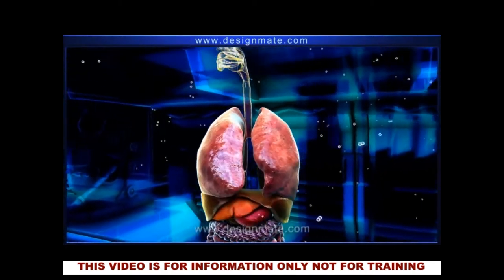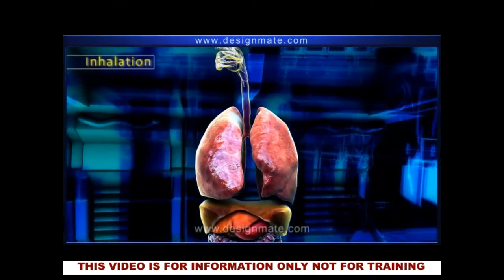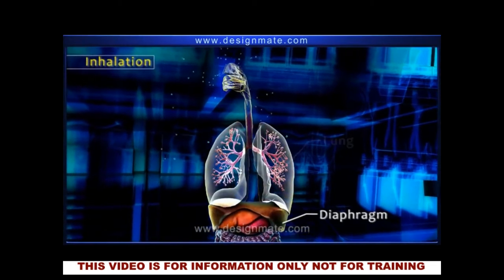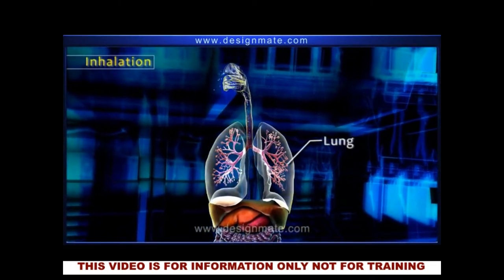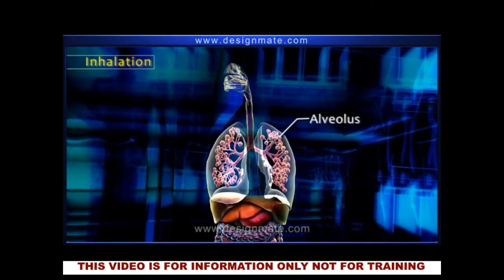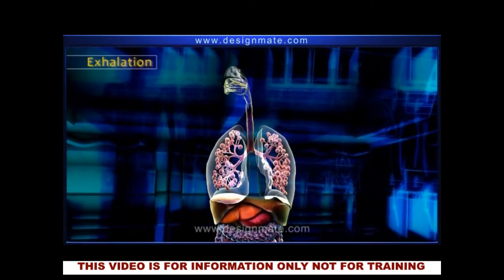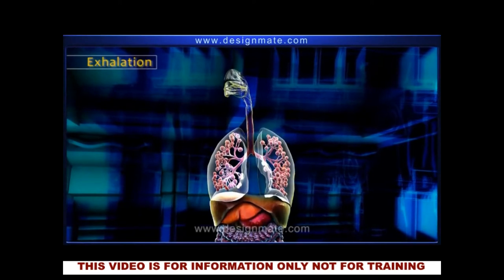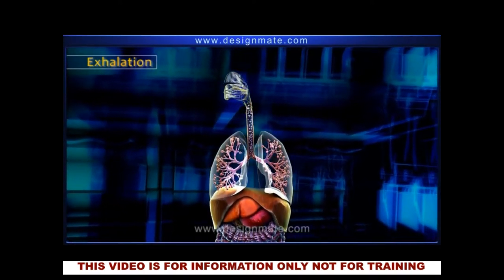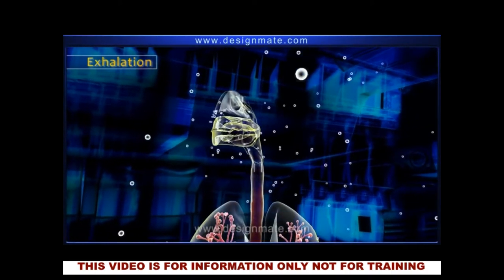The process of breathing in air rich in oxygen is called inhalation. After contraction of the muscular diaphragm, the lungs expand and the air rushes in, resulting in inflation of the alveoli. During exhalation, the diaphragm moves up and the lungs contract, thus the alveoli deflate, causing the air to be forced out. This exhaled air is rich in carbon dioxide.